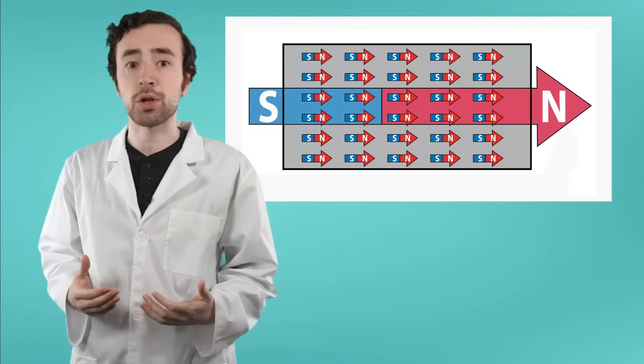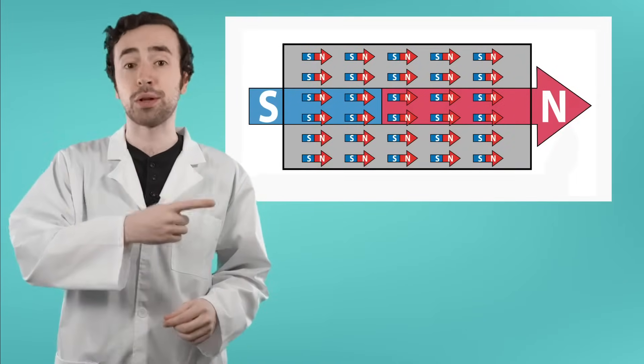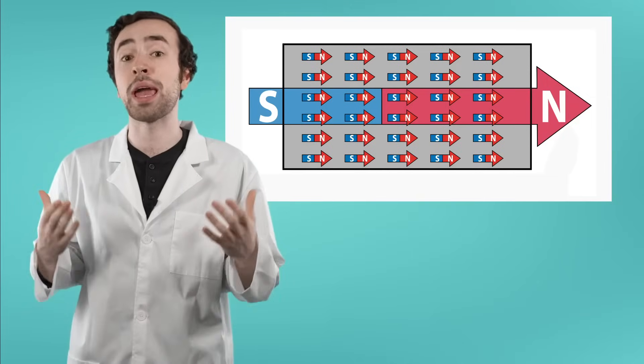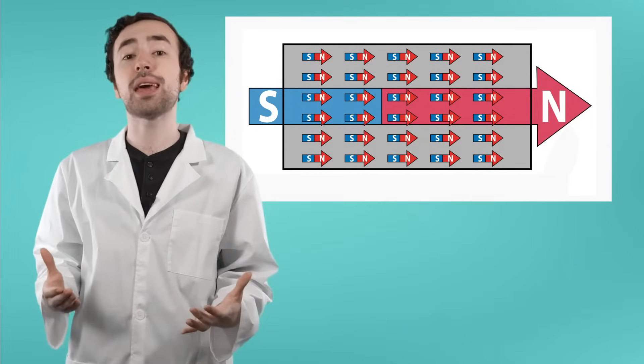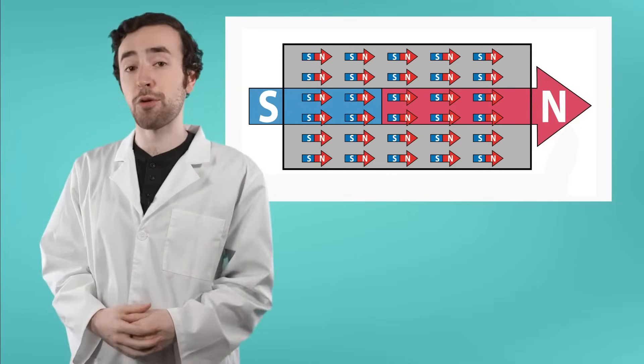So since all these electrons are facing the same direction, there is a pretty clear front end and back end to a magnet. We call these ends the north pole and the south pole respectively.